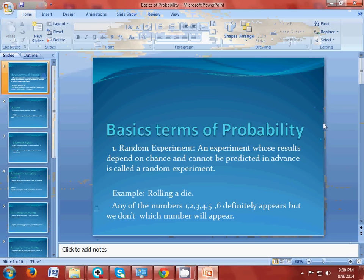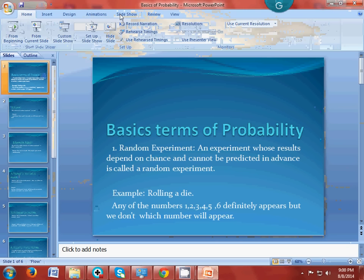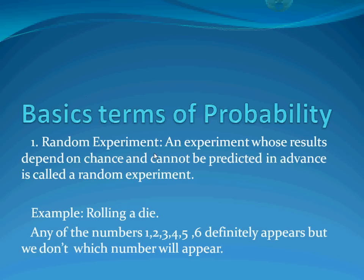Let us learn about the basic terms related to probability. The first thing that comes to mind is the random experiment. A random experiment is an experiment whose results depend on chance and cannot be predicted in advance. It is called a random experiment.